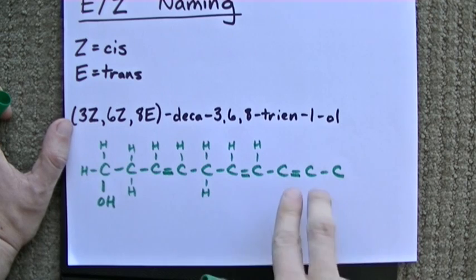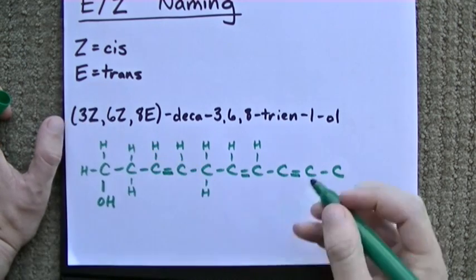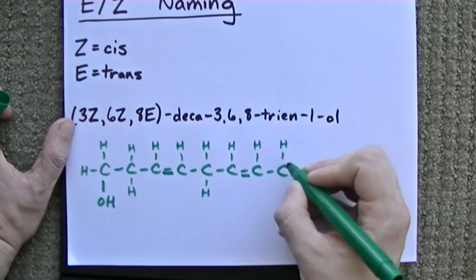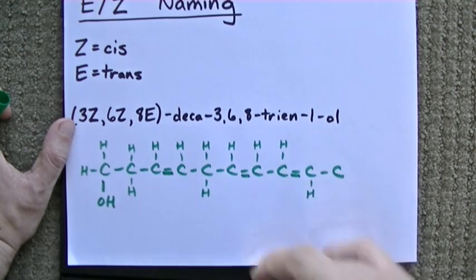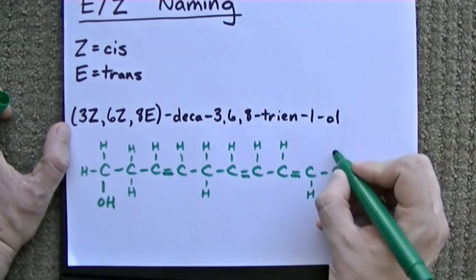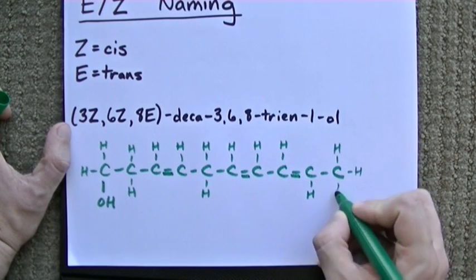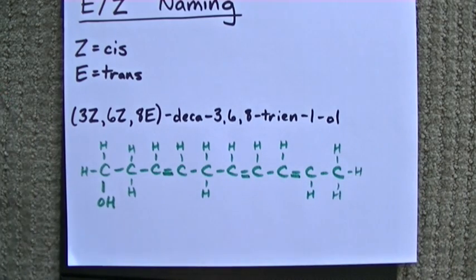And we're already at the next double bond, which is trans. Again, it doesn't matter if you go up then down or down then up, as long as they're both on opposite sides of the double bond. And we've filled in our molecule. Take a look.